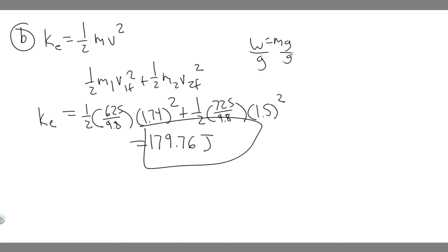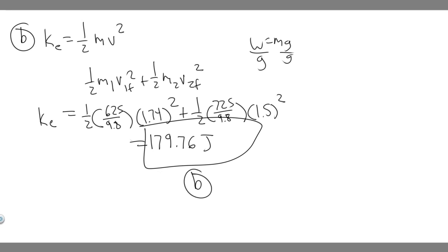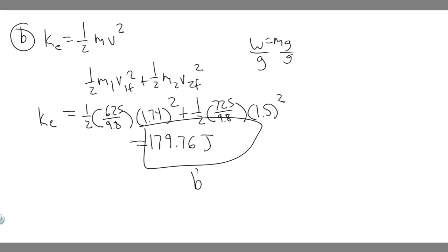Where does this energy come from? They're pushing off each other, and that push creates the energy. It comes from the forces the skaters apply on each other when they push off, speeding up their velocities. So 179.76 joules is your answer to Part B, and the energy comes from their pushes. Hopefully you found this useful.